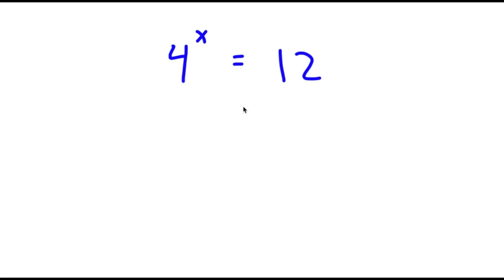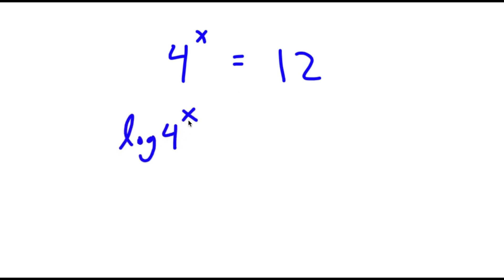In this problem, I have 4 to the power of x is equal to 12. To solve this, I'm going to first start by taking the log on both sides. So now I have log of 4 to the power of x is equal to log 12.